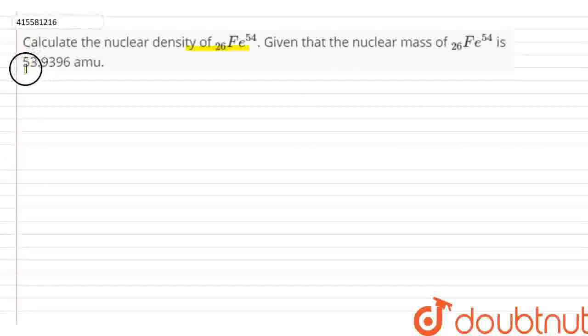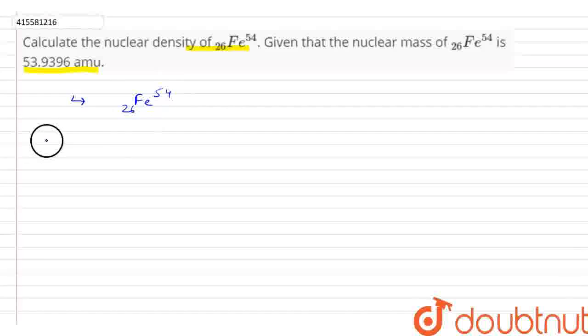is 53.9396 amu. To find the nuclear density, we first need the radius of the nucleus.